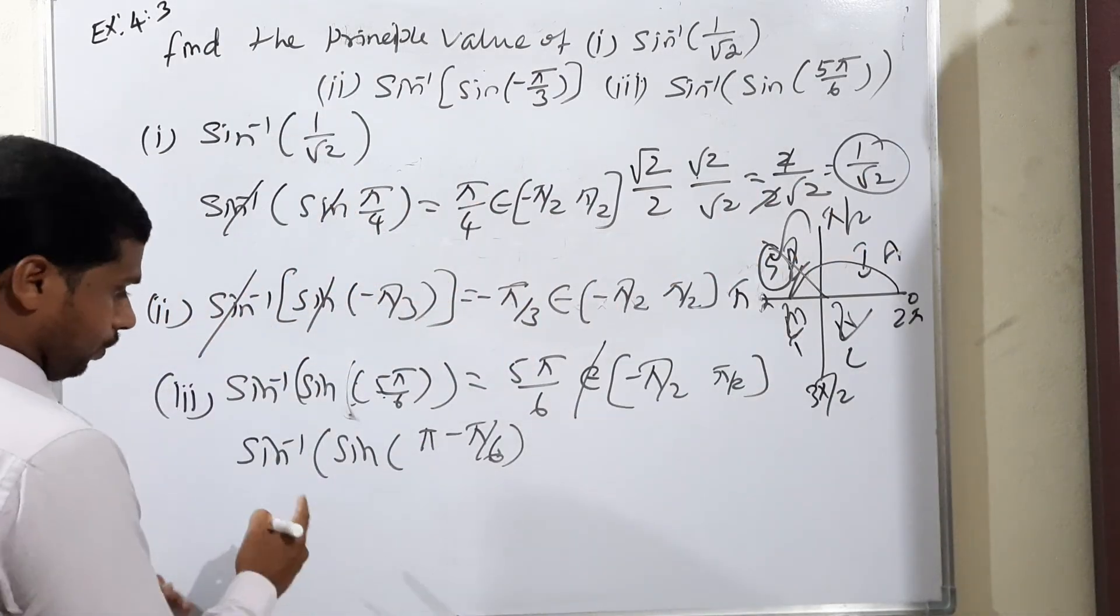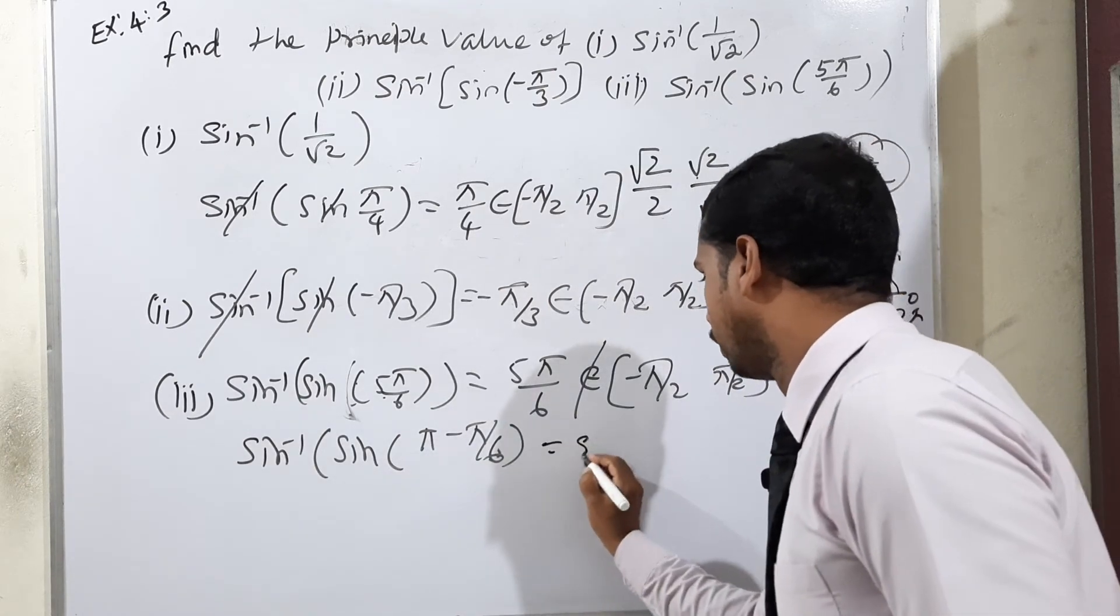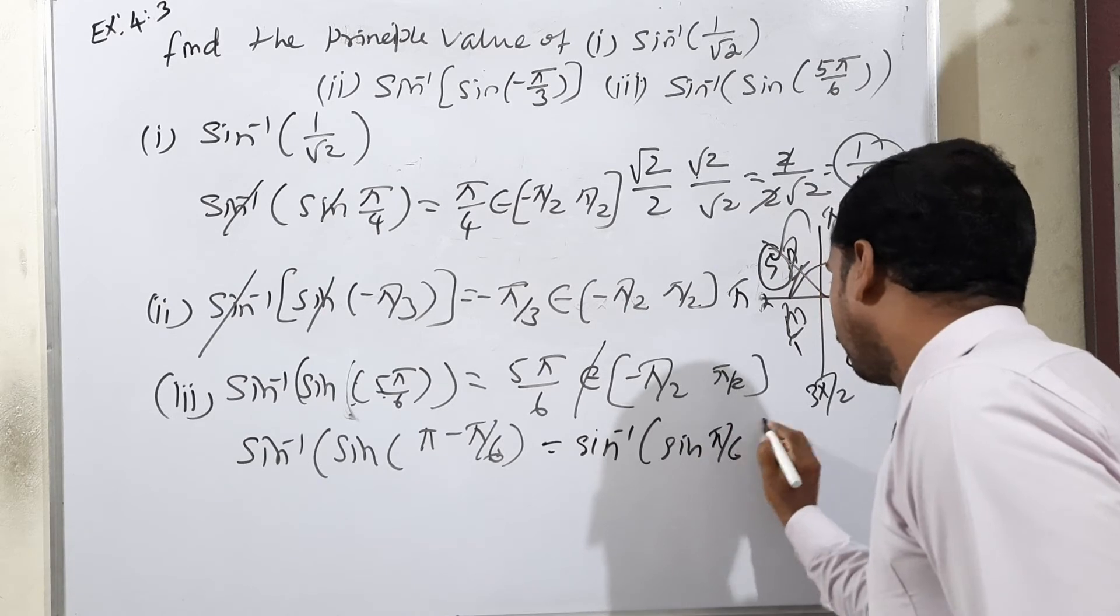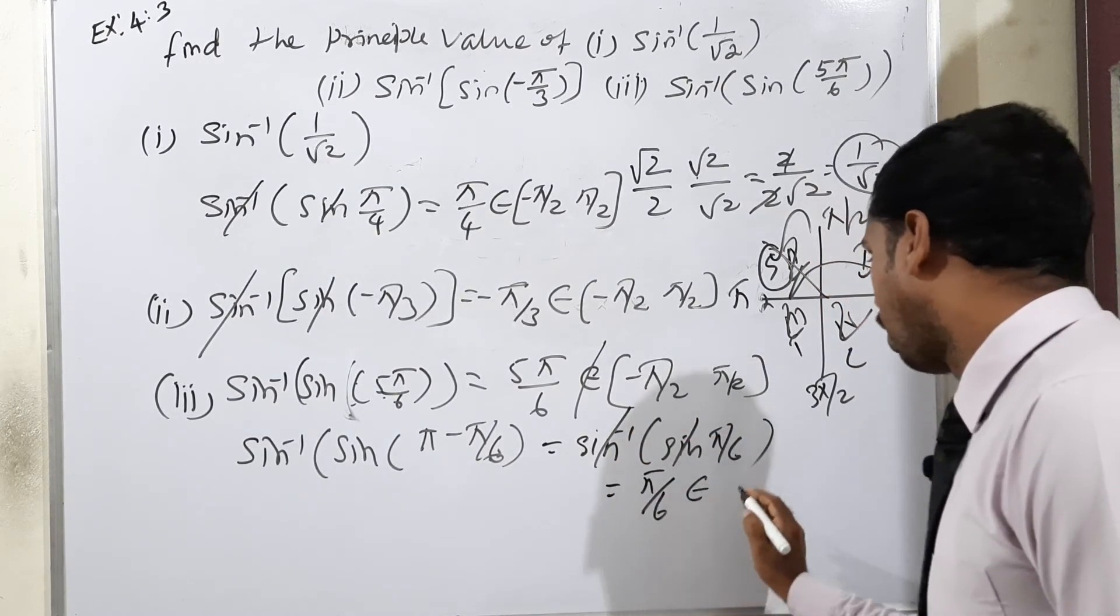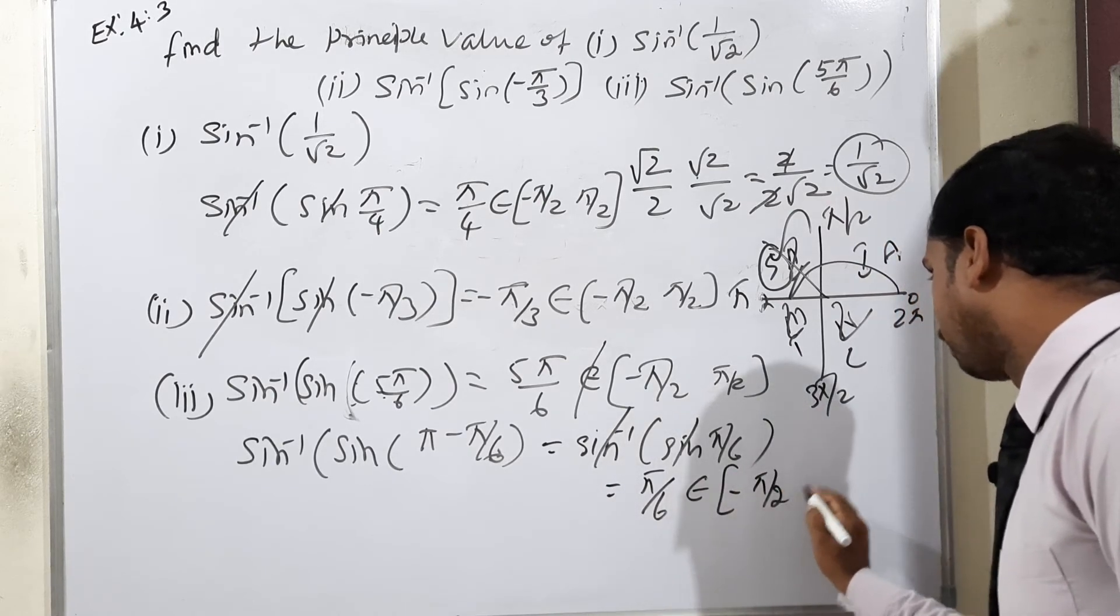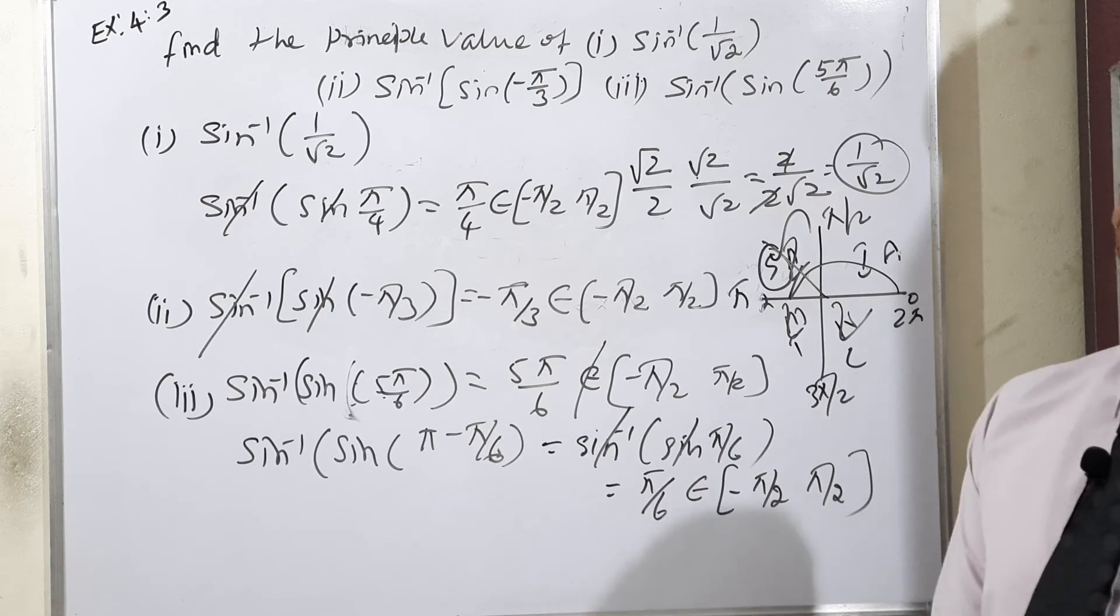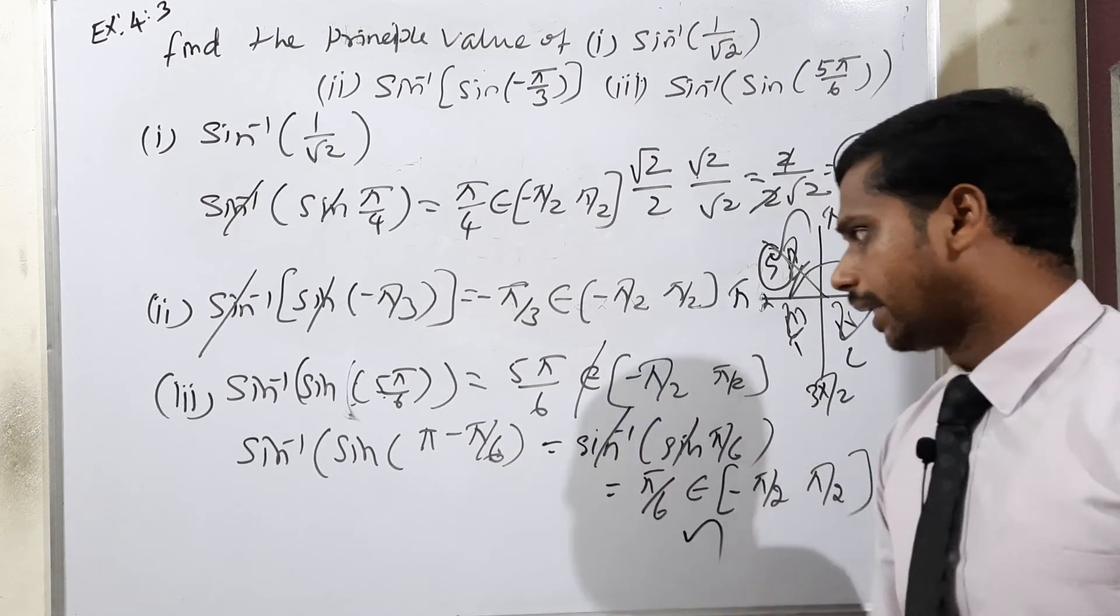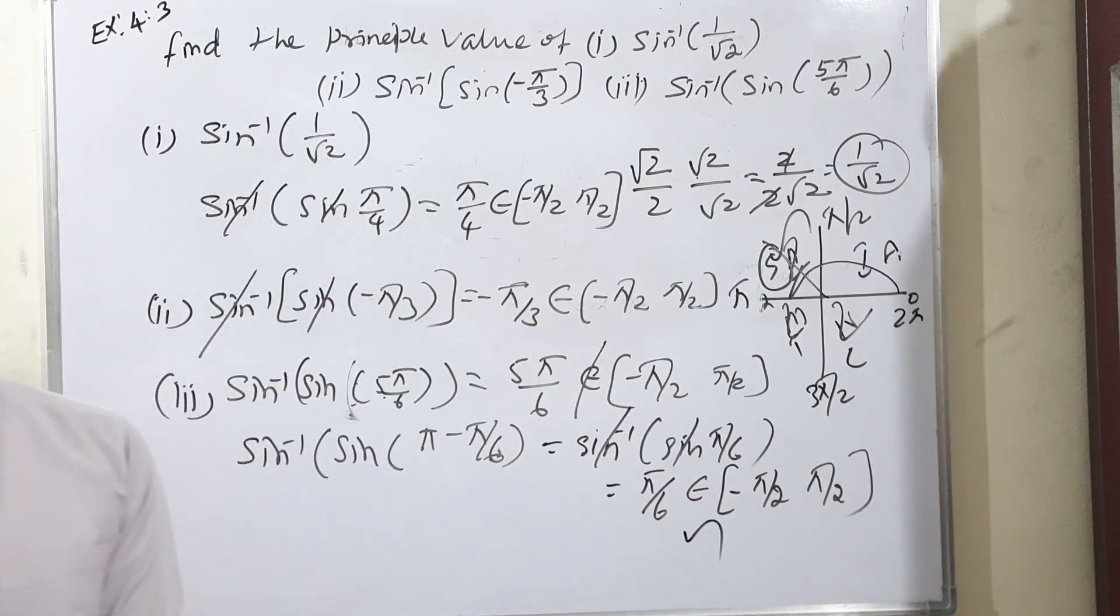How to rewrite now? Sin inverse sin of π minus π/6 is equal to sin inverse sin of π/6. Now you can check it, sin inverse sin cancel means π/6. It belongs to -π/2 to +π/2. See, π/6 definitely, 180 means 30 degree, it is in the interval, condition is clear. Sin inverse of sin π minus π/6 equals π/6. This is our final answer. 3 subdivisions also clear.